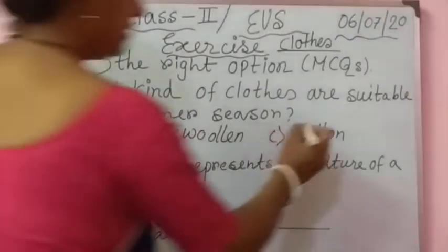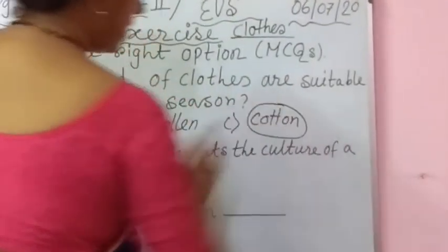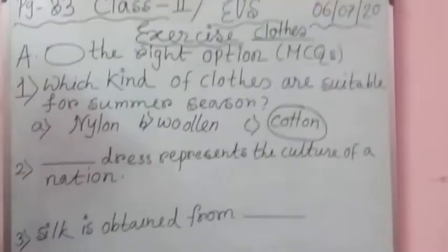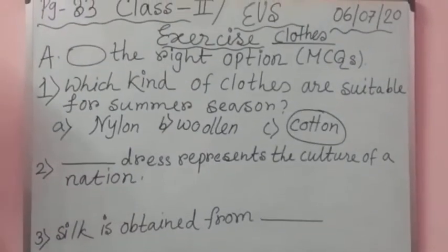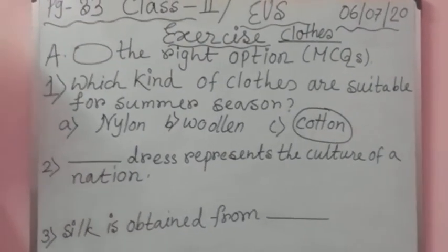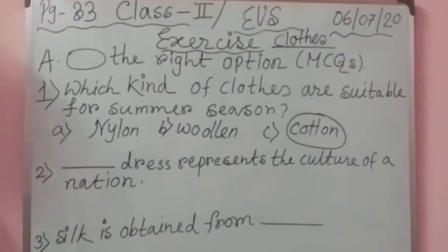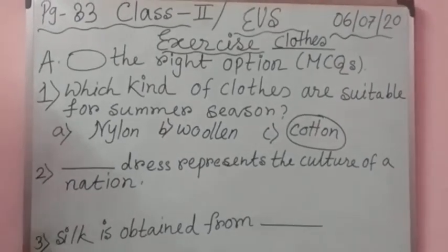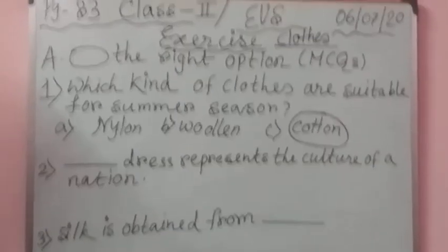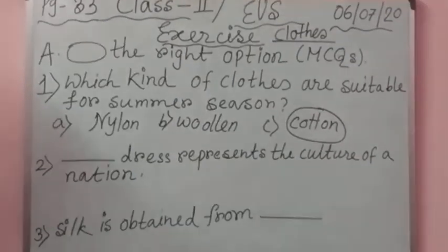The correct option will be C — Button. Which kind of clothes are suitable for summer season? Answer will be number C, Button.